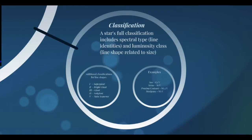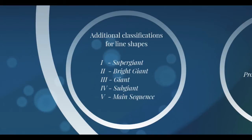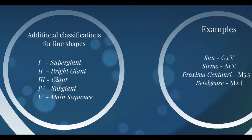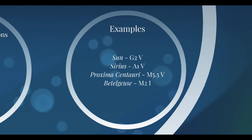A star's full classification includes both the spectral type — O, M, and so on — and luminosity classes related to the shape and size of the star. Class I is a supergiant, II is a bright giant, III is a giant, IV is a subgiant, and V (type 5) is a main sequence star. For example, our Sun is spectral type G2, type 5; Sirius is A1 type 5; and Betelgeuse is M2 type 1, a supergiant.